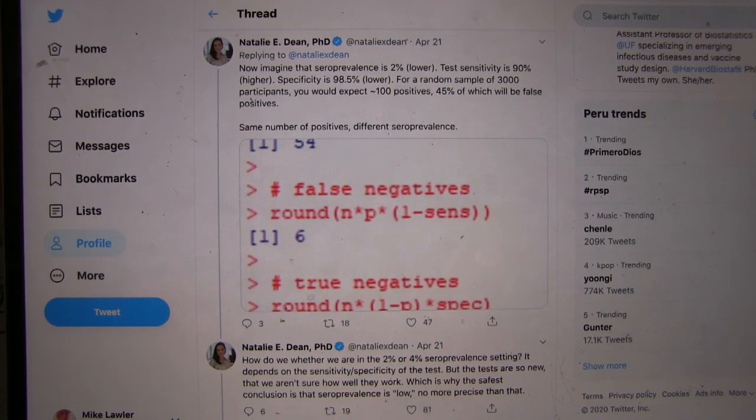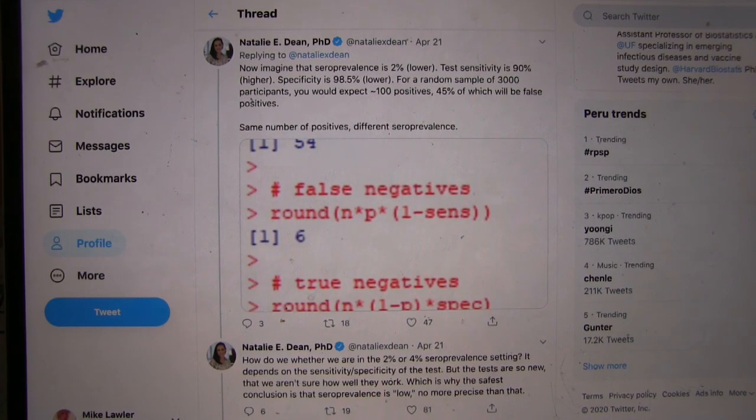Well, as the specificity was really almost perfect in the last example, but now it's 98.5%, so that means automatically 1.5% of the population will test positive but not actually have it.